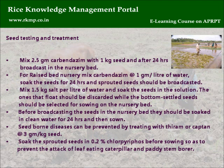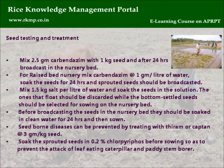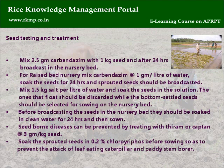Mix 1.5 kg salt per litre of water and soak the seeds in the solution. The ones that float should be discarded, while the bottom-settled seeds should be selected for sowing in the nursery bed. Before broadcasting, seeds should be soaked in clean water for 24 hours. Seed-borne diseases can be prevented by treating with thiram or captan at 3 grams per kg seed. Soak sprouted seeds in 0.2% chlorpyrifos before sowing to prevent attack of leaf-eating caterpillar and paddy stem borer.